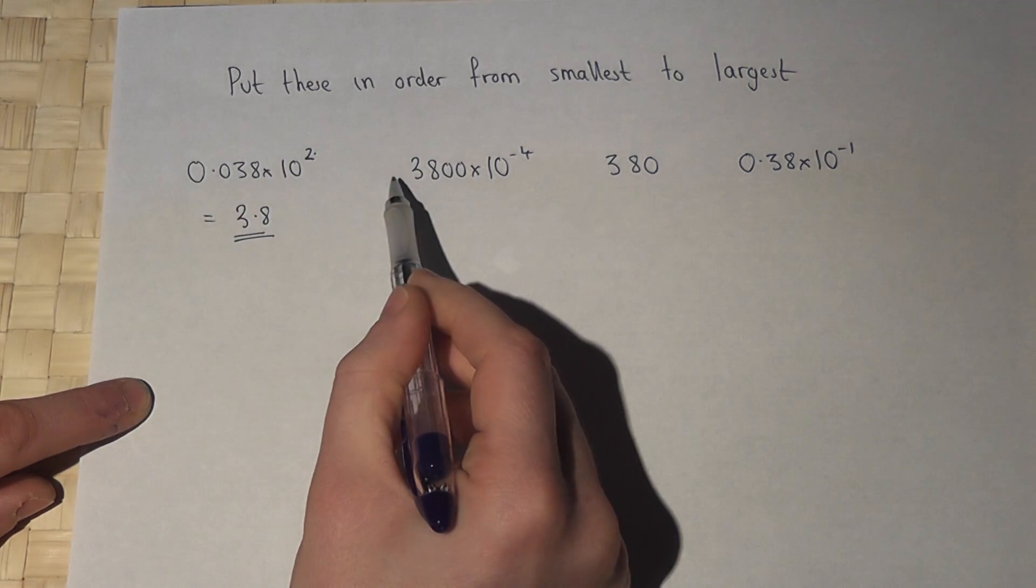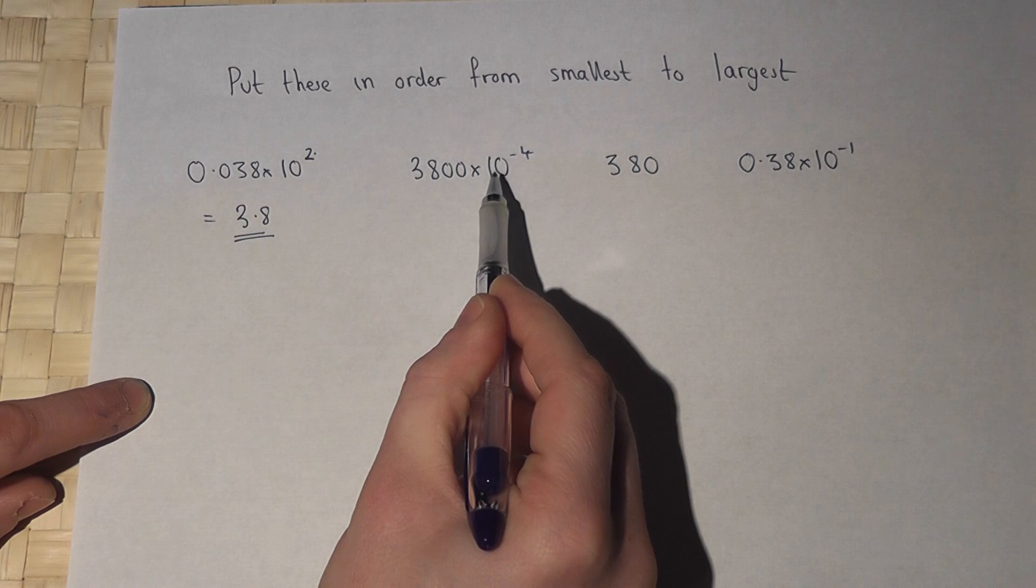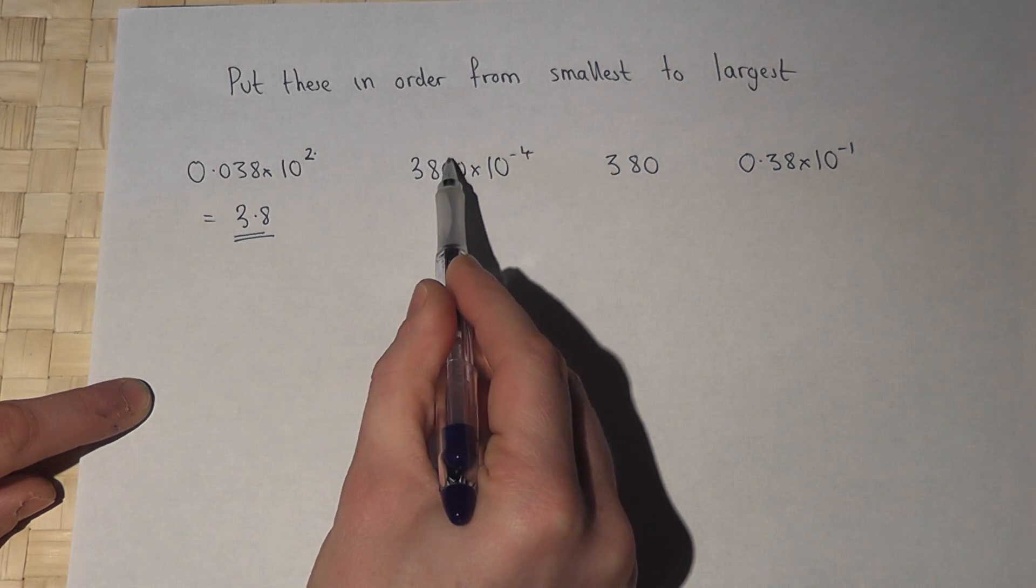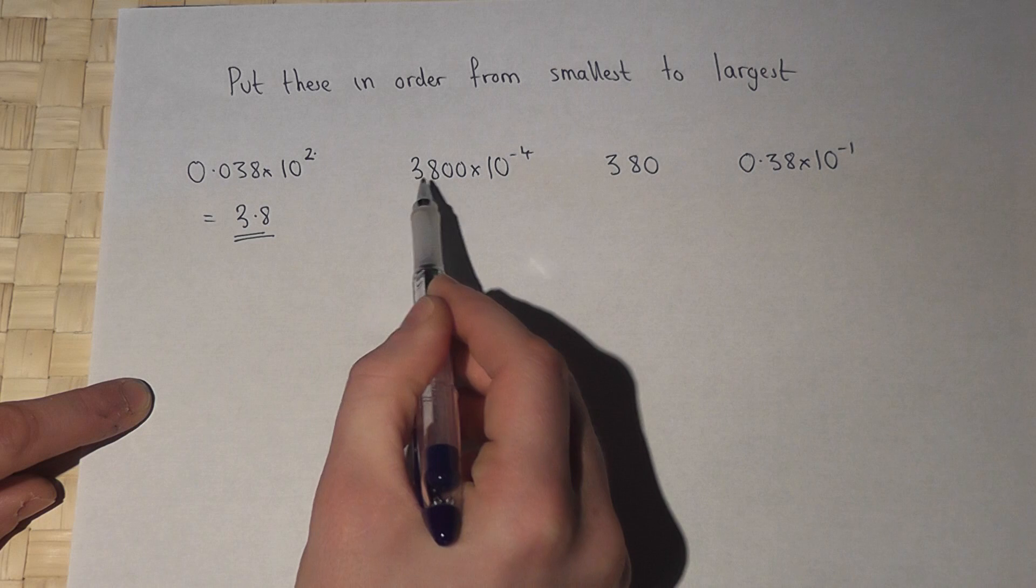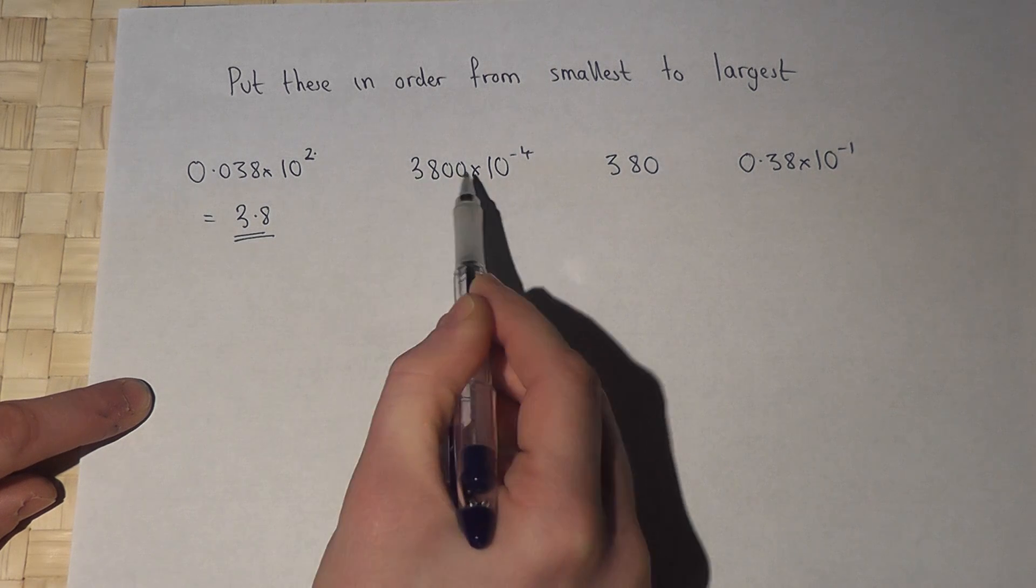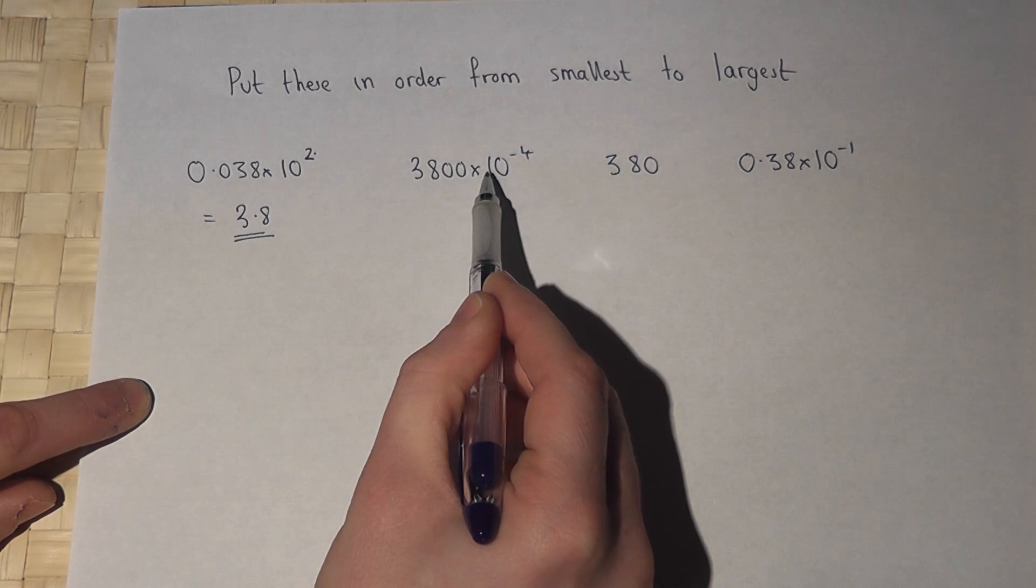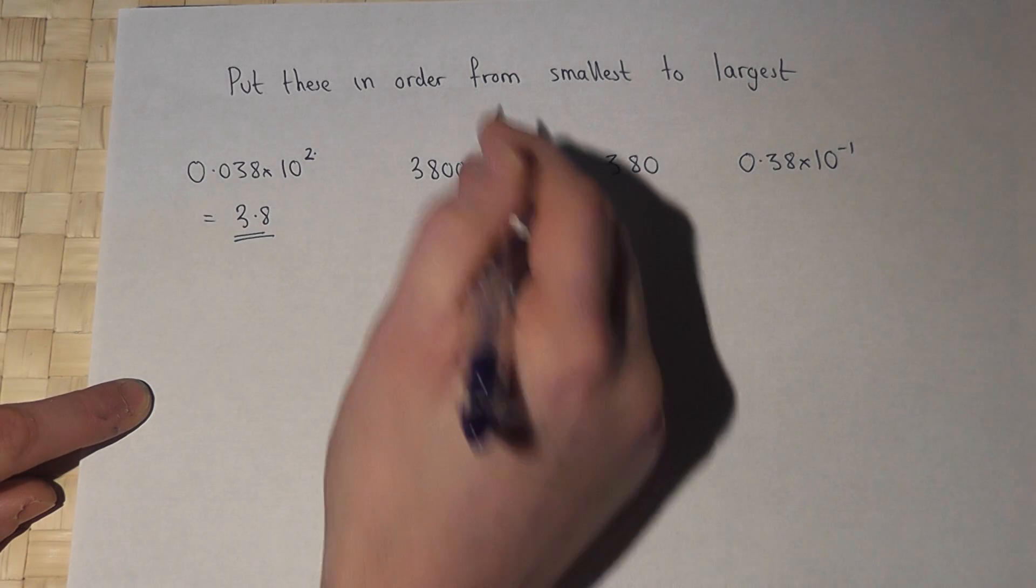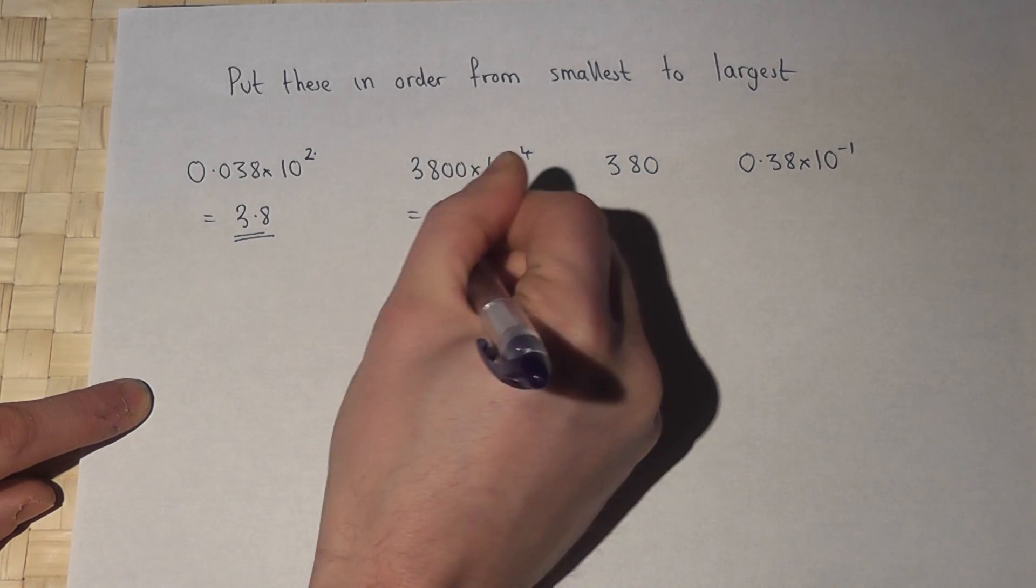Now 3,800 times 10 to the power of minus 4 means divide by 10 four times. So 3,800 goes to 380, then 38, then 3.8 and then 0.38.